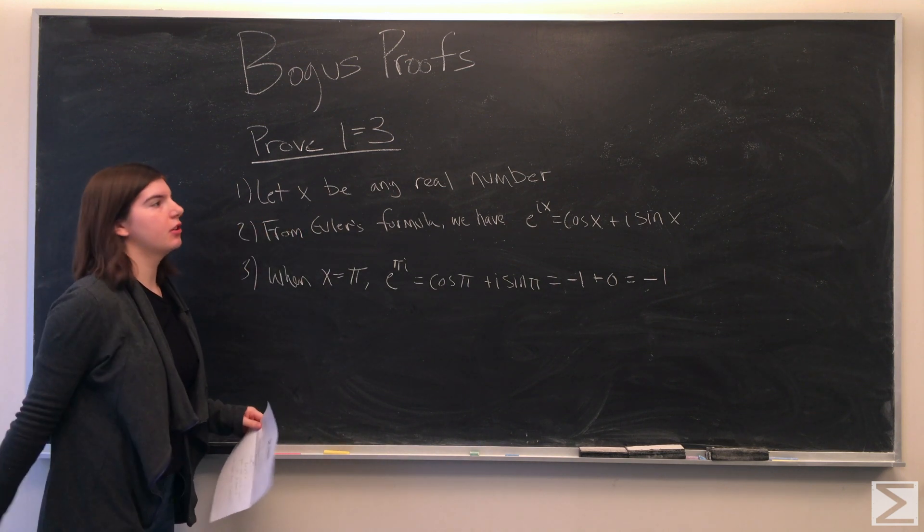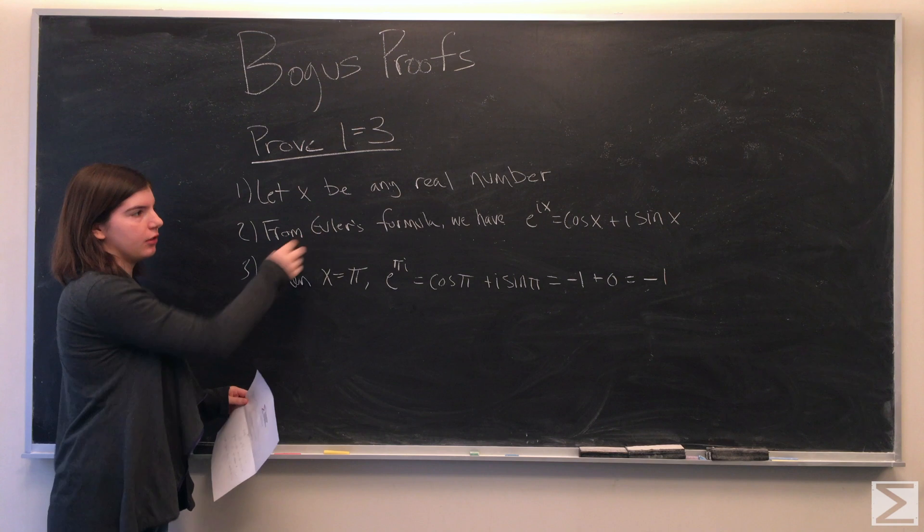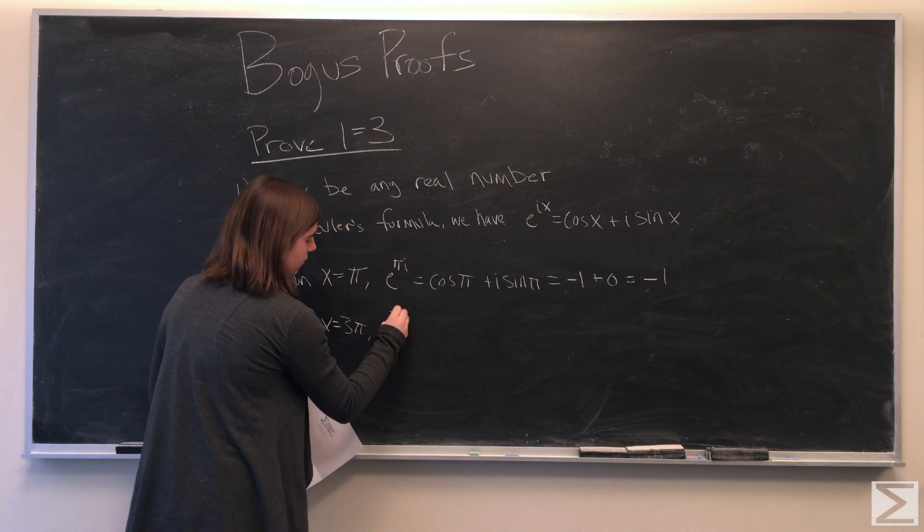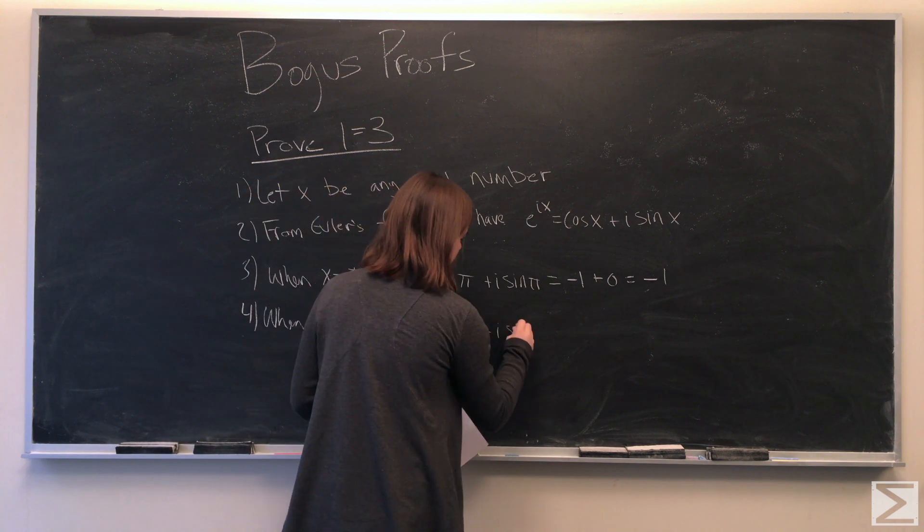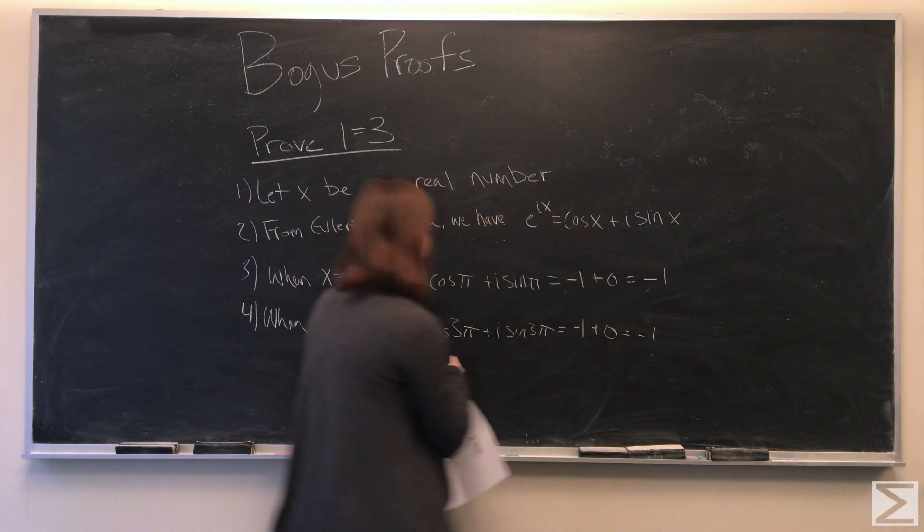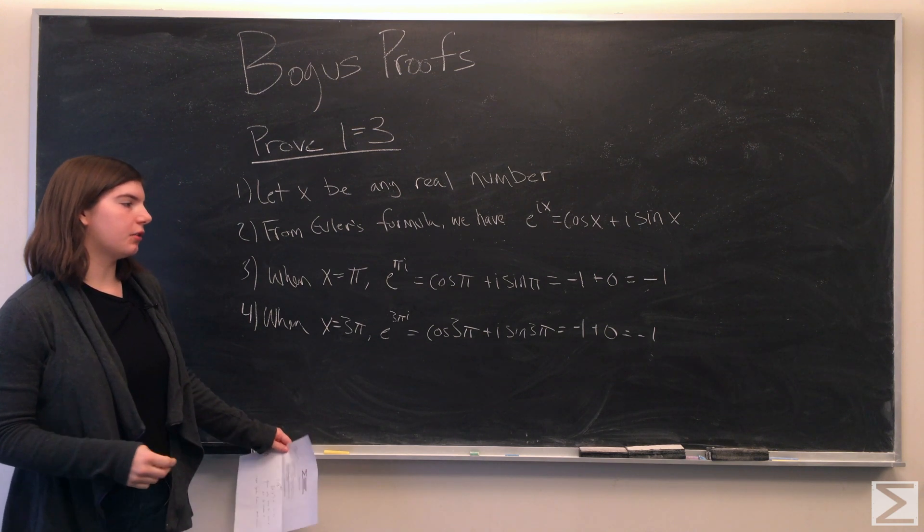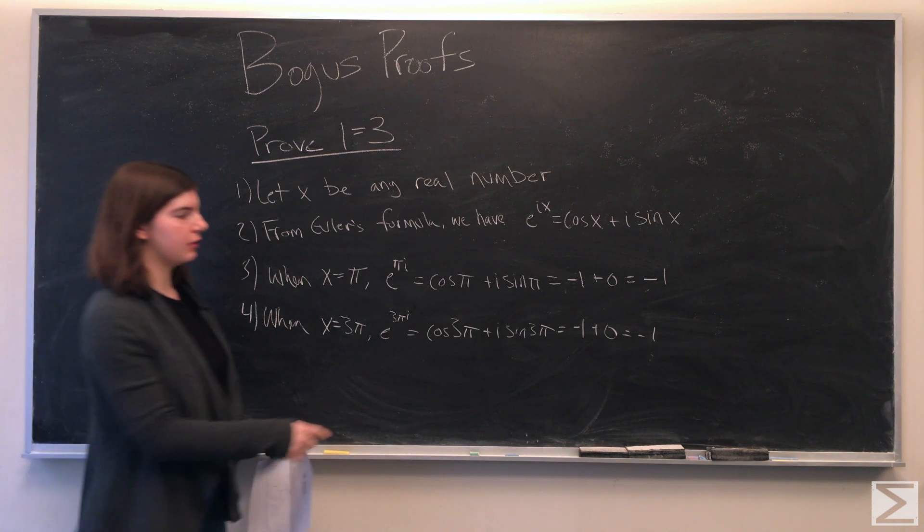3 pi is also a real number, so we can plug in 3 pi into the formula. The cosine of 3 pi is negative 1, and the sine of 3 pi is 0, and again, we're left with negative 1.